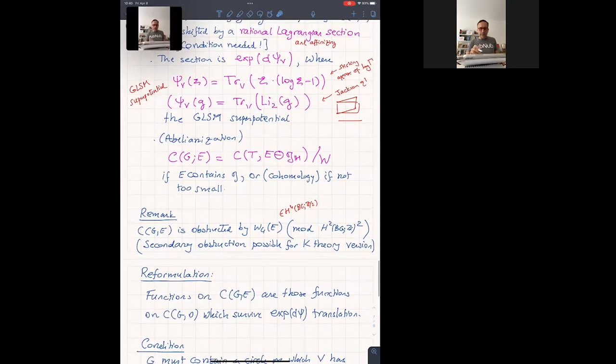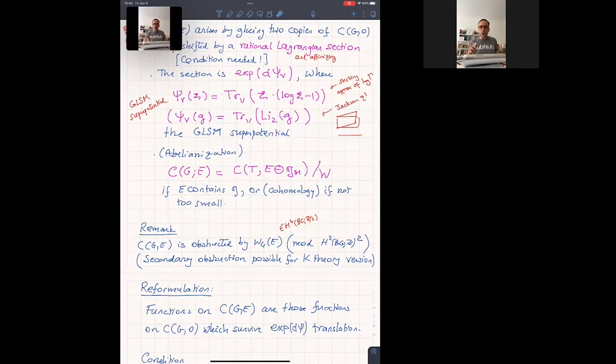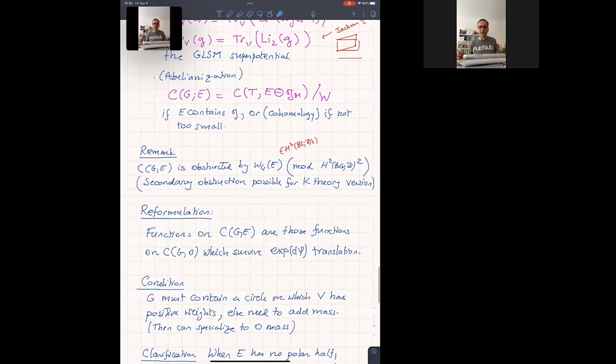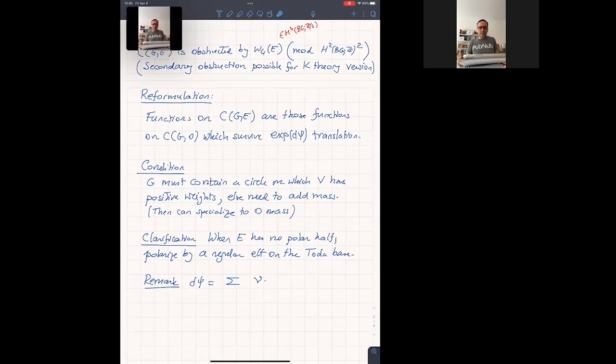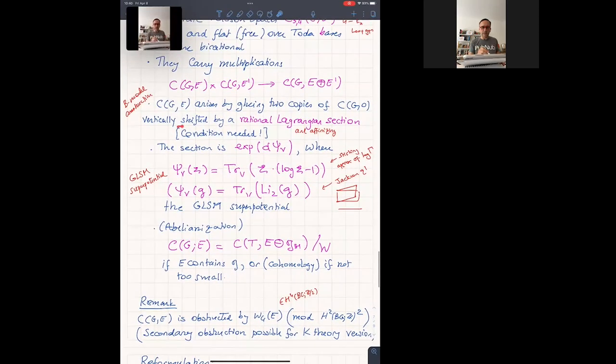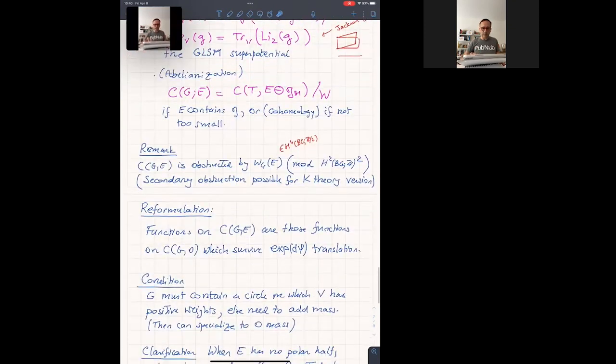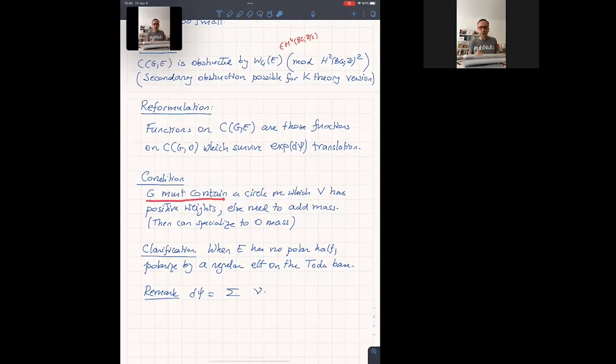So let's reformulate a bit this thing about gluing two copies here by a vertical shift, because I think this idea requires explanation. You could say definitely the functions on the Coulomb branch of the representation E are the sub-ring of functions of the total space. The sub-ring of those functions survive a translation by this. They remain regular. And this has poles. I mean, that's a vanishing condition around some locus.